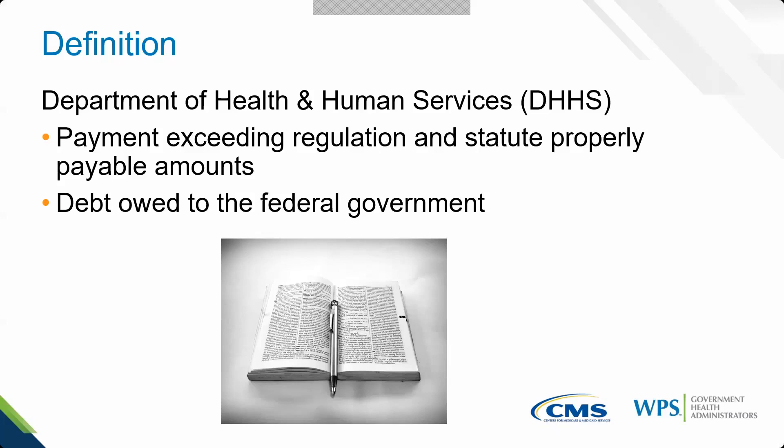The Department of Health and Human Services defines an overpayment as a payment exceeding regulation and statutes that are properly payable — it is a debt owed to the federal government. Simply put: Medicare paid something it shouldn't, so the provider or person who was paid has to pay it back. An overpayment is not just regarding a provider — it can be a provider, a patient or beneficiary, or another payer. It's anyone paid by Medicare.